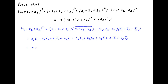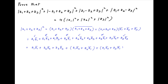This can be rearranged as z1 times the conjugate of z1, plus z2 times the conjugate of z2, plus z3 times the conjugate of z3, plus z1 times the conjugate of z2 plus z2 times the conjugate of z1, plus z1 times the conjugate of z3 plus z3 times the conjugate of z1, plus z2 times the conjugate of z3 plus z3 times the conjugate of z2.